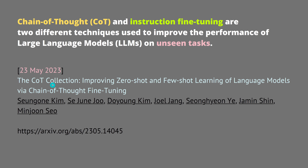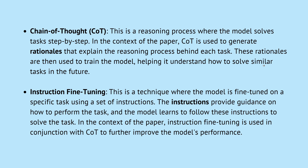They have 1.8 million COT data points where we can now fine-tune our large language model, and they have a combination of chain of thought and fine-tuning. Chain of thought is a reasoning process where the model solves tasks step by step. You present the chain of thought as a step-by-step process to the model. Chain of thought is used to generate rationales that explain the reasoning process behind each task.